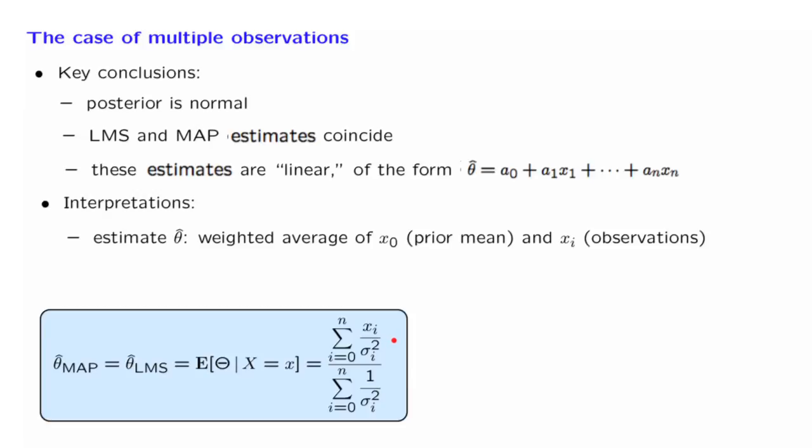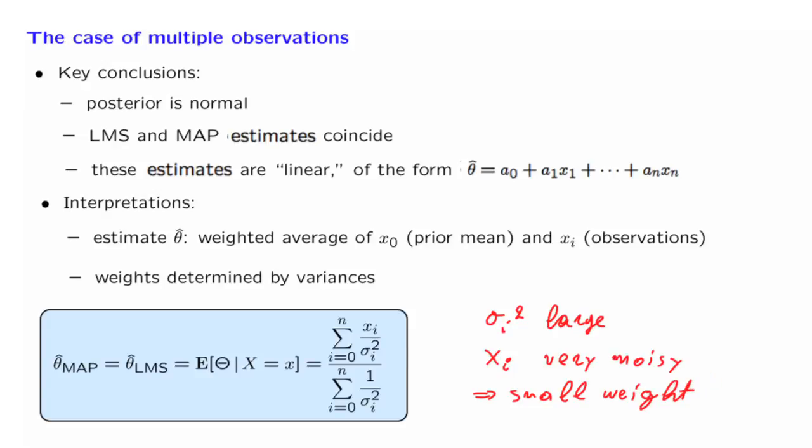The weights that we have in this weighted average are that each xi gets divided by the corresponding variance. Does this make sense? Well, suppose that sigma i squared is large. This means that the noise term wi is very large. So xi is very noisy, and so it's not a useful observation to have. And in that case, it gets a small weight. So the weights are determined by the variances in a way that is quite sensible. Those observations that will get the most weight will be those observations for which the corresponding noise variance is small.